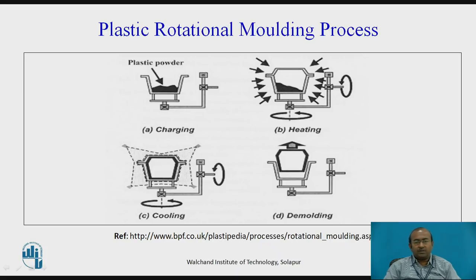As far as this presentation is concerned, we are going to discuss the plastic rotational molding process. Normally, this process is carried out in four stages. The diagram shows the four stages: charging, heating, cooling, and demolding.